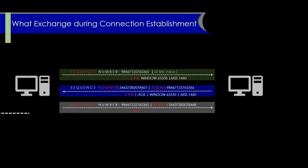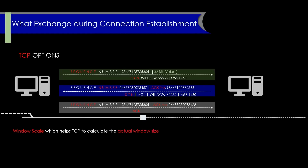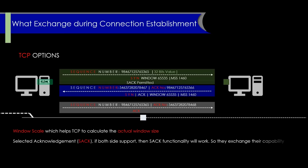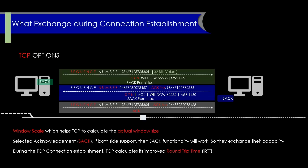TCP also supports a number of optional parameters that can be exchanged during connection establishment. These include selective acknowledgement (SACK), timestamps, and window scaling — which we've already discussed — and these help improve the reliability and efficiency of communication. TCP also calculates the round-trip time (RTT) during connection establishment, which is used for more reliable congestion control.